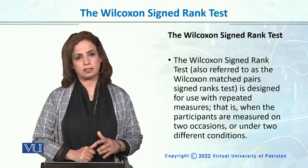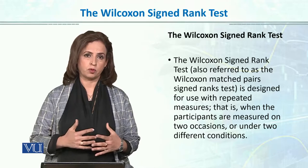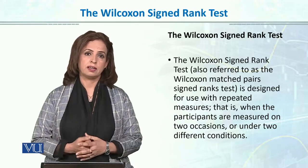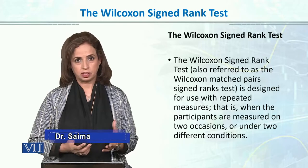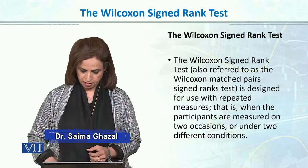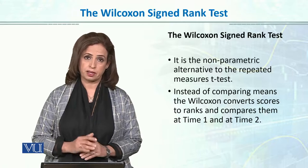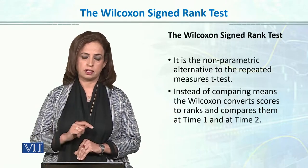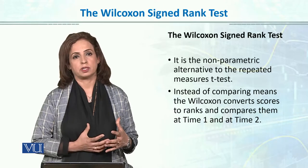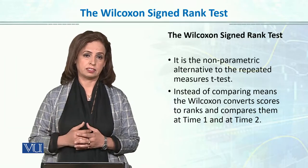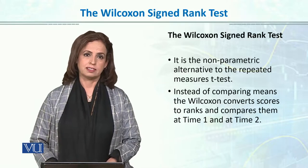Moving next, the Wilcoxon signed rank test, also called the matched paired signed rank test, is an alternative to the paired sample t-test or matched sample t-test. It is the non-parametric alternative to the repeated measures t-test. Instead of comparing means, Wilcoxon converts scores into ranks and compares them at time 1 and time 2. If parametric assumptions are not met, the best alternative will be the Wilcoxon signed rank test.